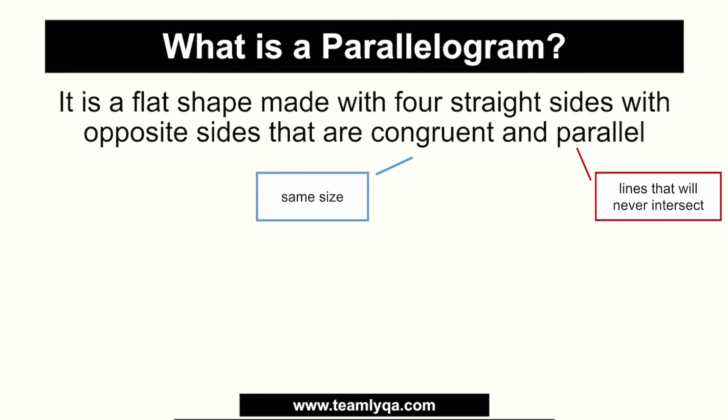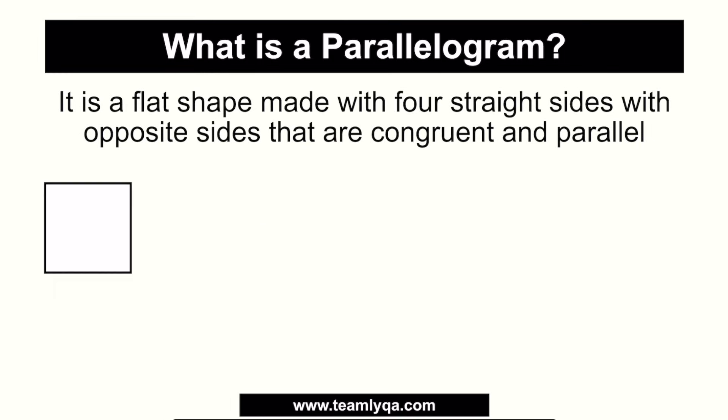Now, let's look at these shapes. First, we have this one — medyo familiar sa atin ito. When we started kindergarten, isa sa mga unang tinuro ito — this is a square. The definition of a square is that it's made out of four sides, and of course, they are straight. So we have one, two, three, four. And yung opposite sides ba niya? Congruent and parallel.